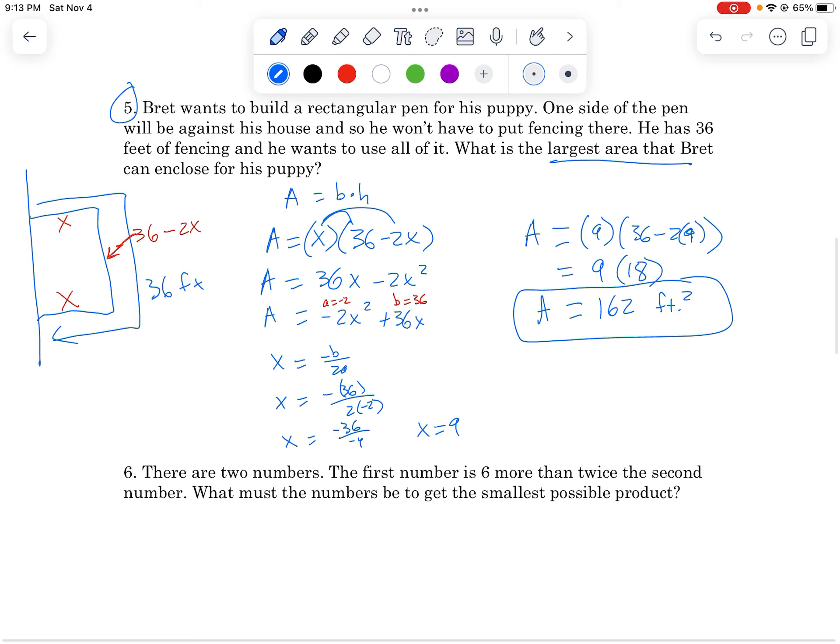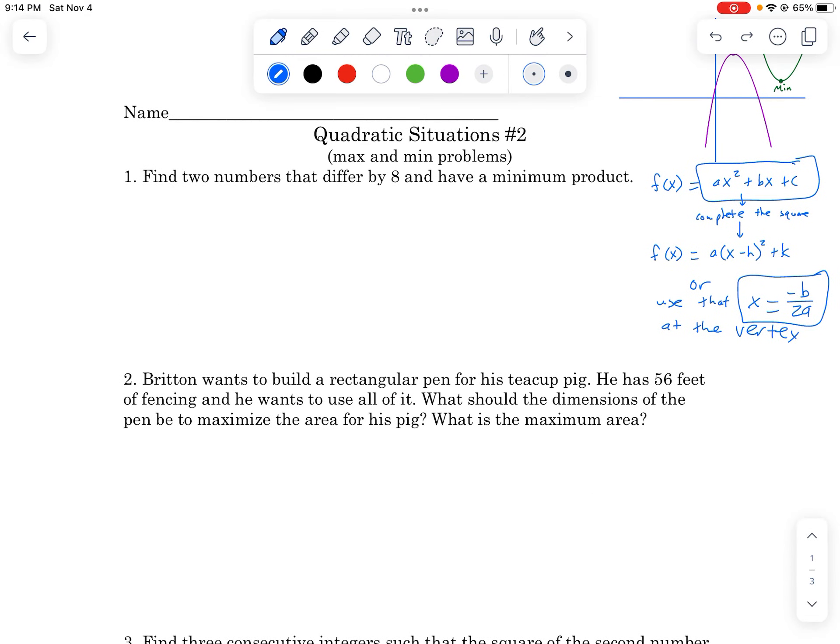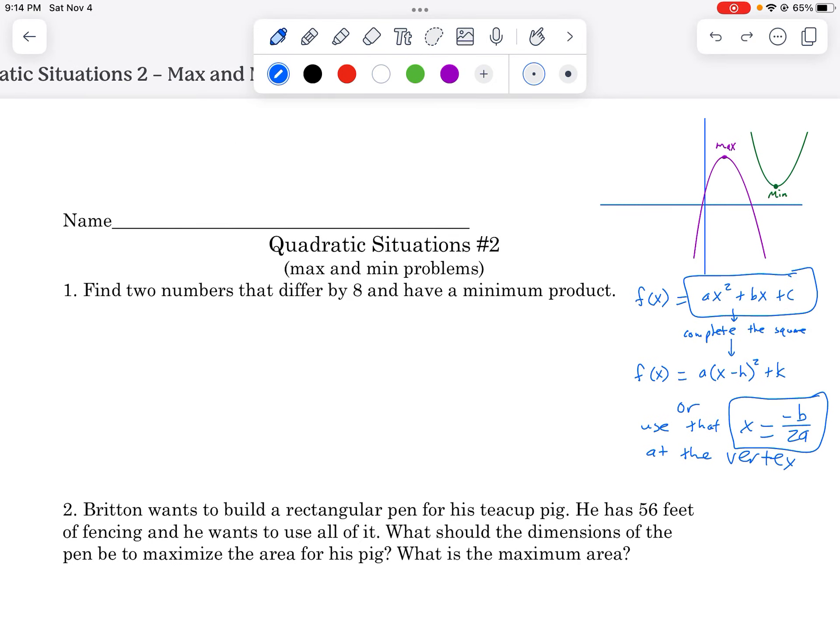So realize when you get an answer, you should look at what it means and if it's your actual answer. In this case, it wasn't. In the previous problem, it was. So just be cognizant of what the things stand for, and it'll help you make sure you're getting the answer. So there you go. A couple examples from quadratic situations number two, using this strategy, using this little formula of x equals negative b over 2a can help you find your maximum. Good luck.